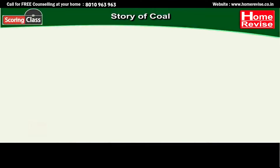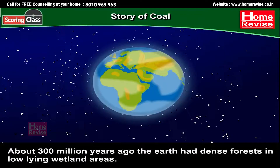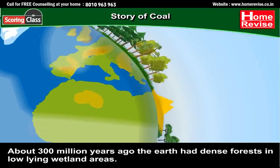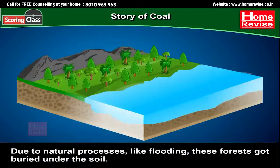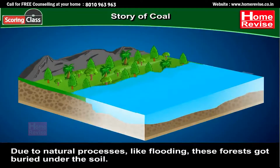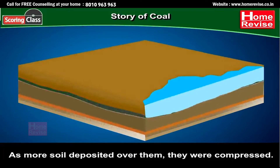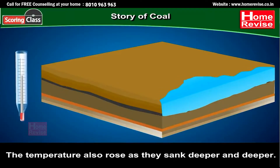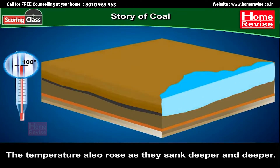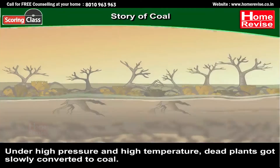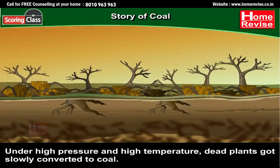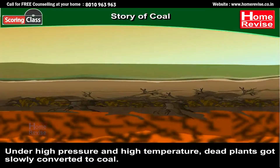Story of Coal: About 300 million years ago, the earth had dense forests in low-lying wetland areas. Due to natural processes like flooding, these forests got buried under the soil. As more soil deposited over them, they were compressed. The temperature also rose as they sank deeper and deeper. Under high pressure and high temperature, dead plants slowly got converted to coal.